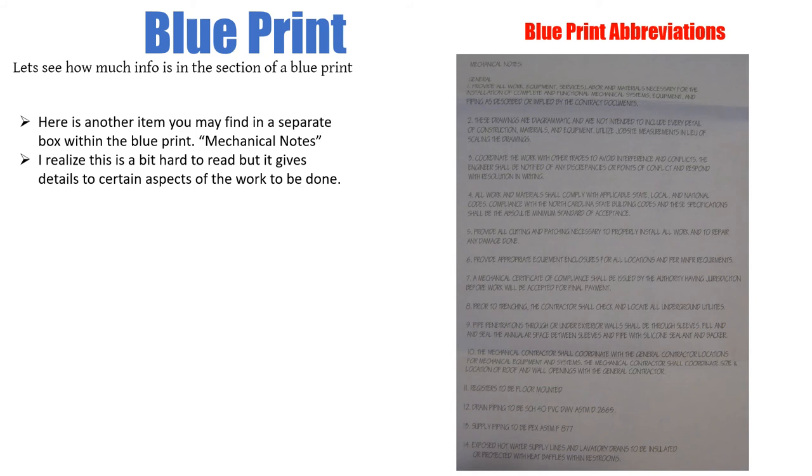So here's another item you may find in a separate box within a blueprint, some kind of a mechanical note. I realize that this is hard to read but it gives details to certain aspects of the work that has to be done. For our sake, if we just look down here for instance, number 12, drain piping to be Schedule 40 PVC piping DWV. It also shows us number 13, supply piping to be PEX. We even talked about DWV earlier in the very first slide. It stands for drains, wastes, and vents, so here's another place you may see an abbreviation pop up.